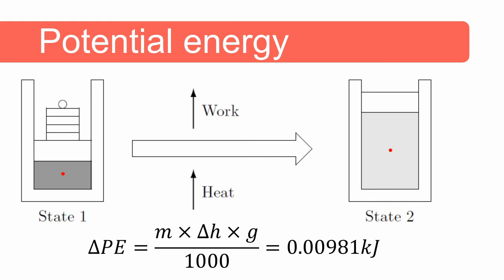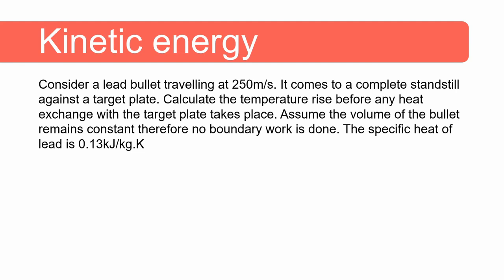Next let's look at kinetic energy. Consider a lead bullet traveling at 200 meters per second that comes to a complete standstill against a target plate. Calculate the temperature rise before any heat exchange with the target plate takes place. We can assume the volume of the bullet remains constant, so no boundary work is done. The specific heat of lead is 0.13 kilojoules per kilogram Kelvin. The energy before the collision is the internal energy plus the kinetic energy of the bullet.